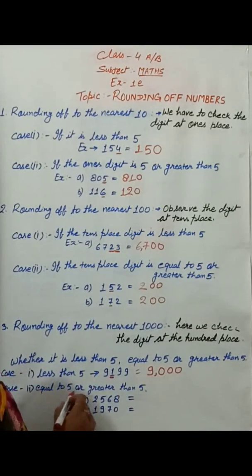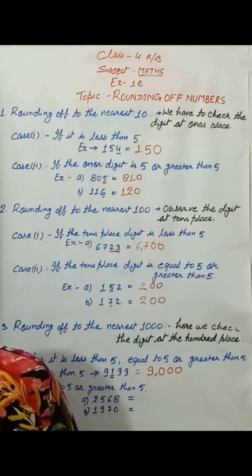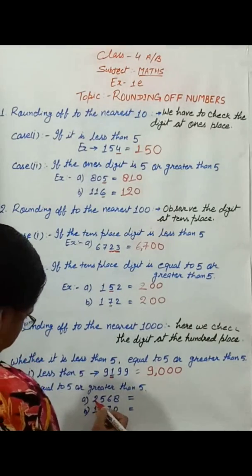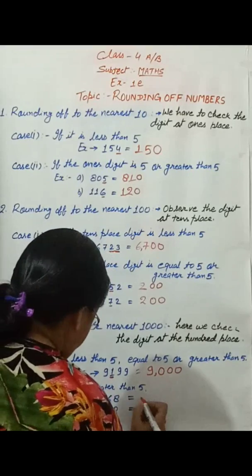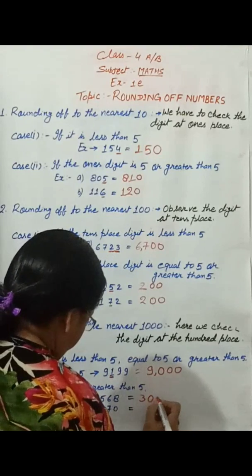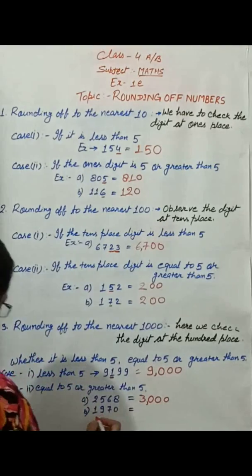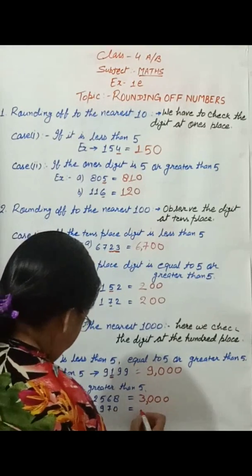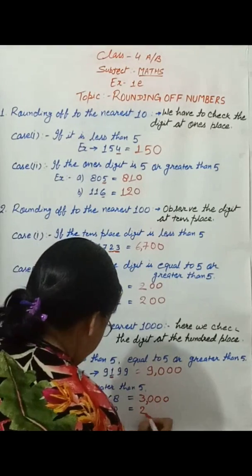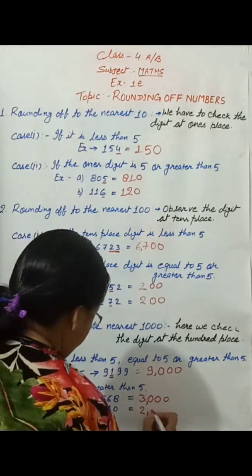If equal to five or greater than five, we increase the thousands digit by one and replace the hundreds, tens, and ones digits by zero. Again, add one at the thousands place and replace the hundreds, tens, and ones digits by zero.